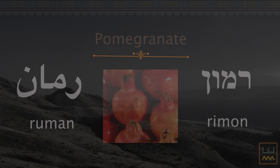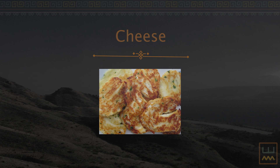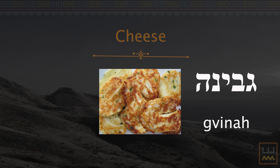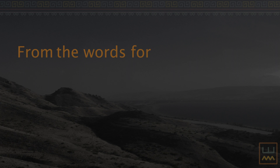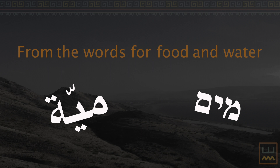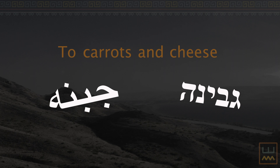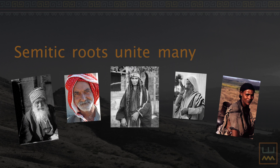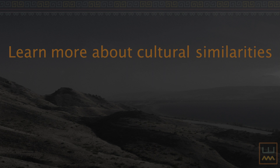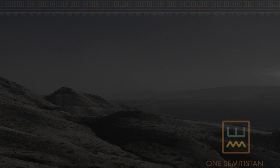Cheese: Gwina (Hebrew), jibne (Arabic). From the words for food and water to carrots and cheese, Semitic roots unite many peoples. Learn more about cultural similarities with Semitistan.